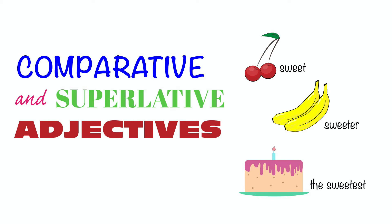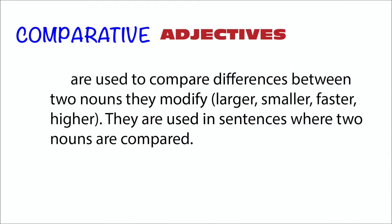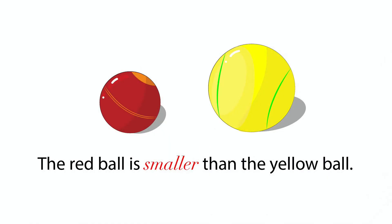Comparative and Superlative Adjectives. Comparative adjectives are used to compare differences between two nouns they modify. They are used in sentences where two nouns are compared. For example: the red ball is smaller than the yellow ball.